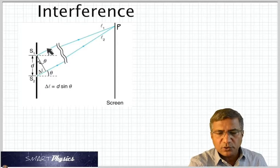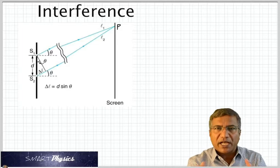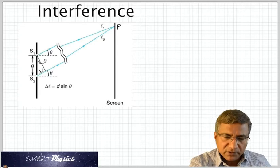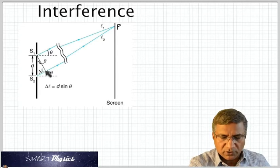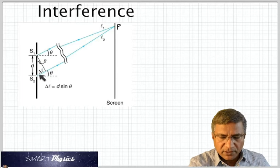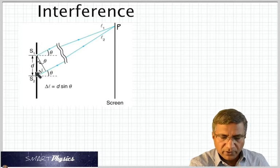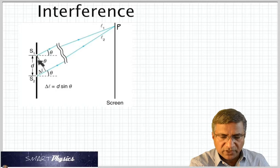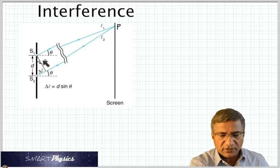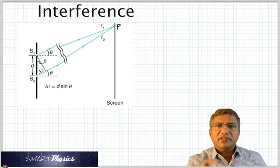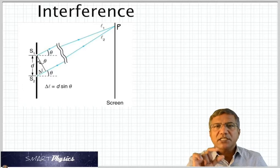So L2 minus L1 will give the path difference. In order to find that path difference, a perpendicular is drawn from S1 onto this line. This delta L is going to give the path difference. From the small triangle, if you take this angle as theta, delta L being the opposite side is D sin theta. That's what you see here.